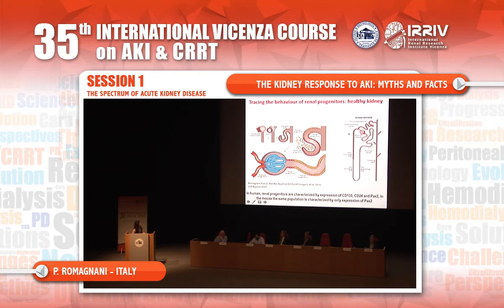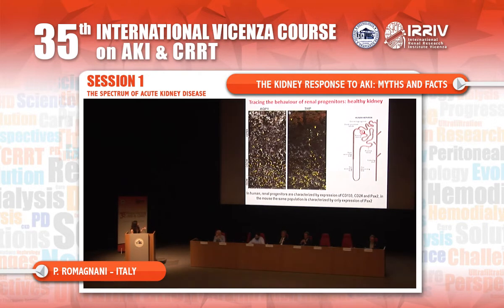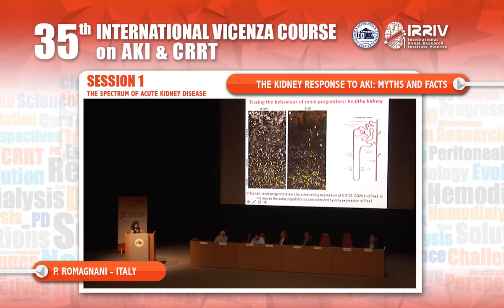At the urinary pole and scattered along the tubule, these cells have the potential to replace tubular cells. The scattered cells are localized in specific segments: mostly some in the S2 segment, most in the S3 segment, and some in the thick ascending limb and convoluted distal tubule. We have a model where we can selectively trace this progenitor population, based on the transcription factor PAX2.